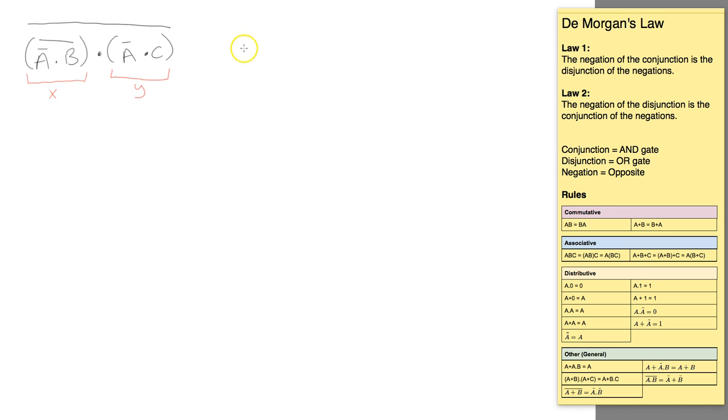That would then give us an expression that looks similar to this. So we'll have the not of X and Y, and the not of all that.